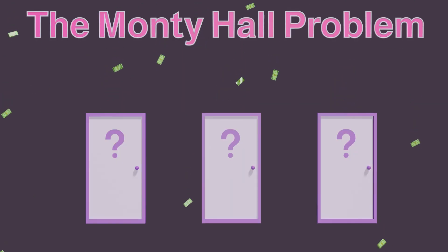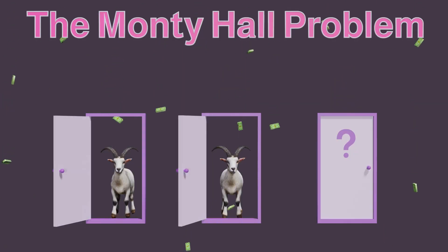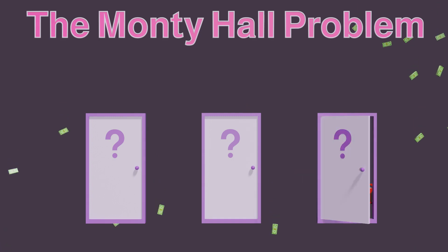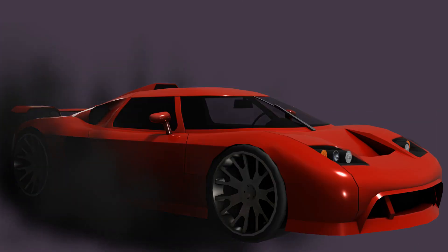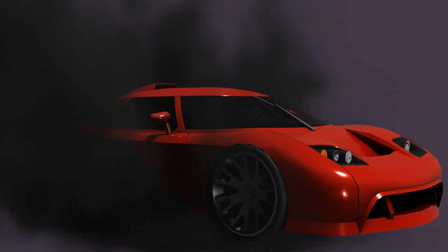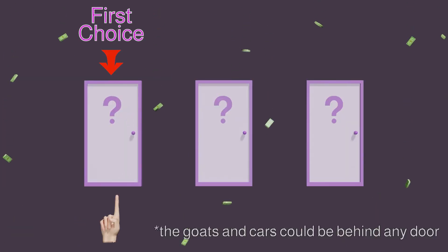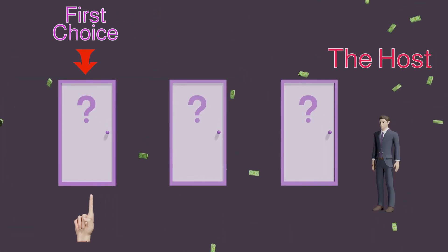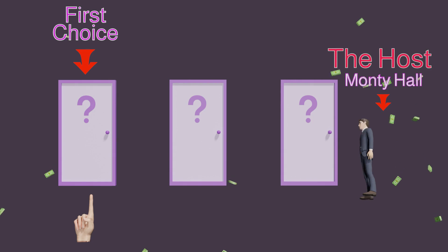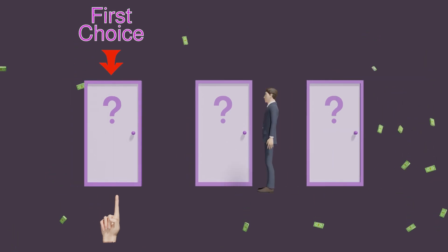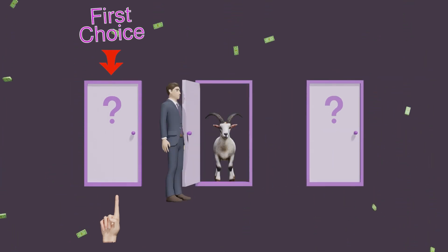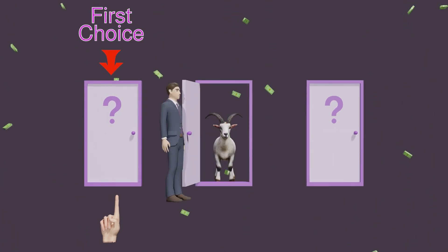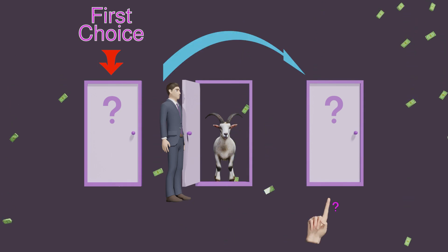Three doors, each hiding a prize. Two have goats, and one lucky door has a car. You want the car because goats poop and the pollution of cars is the future's problem to deal with. You pick a door — your first choice — but before you can open it, the host Monty Hall looks behind and reveals a goat from one of the two other doors and opens it.